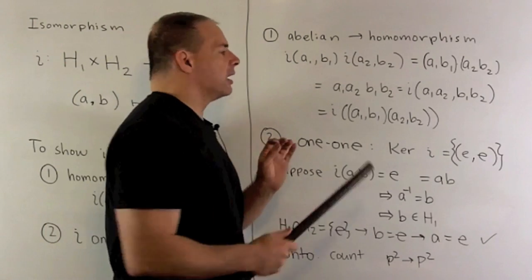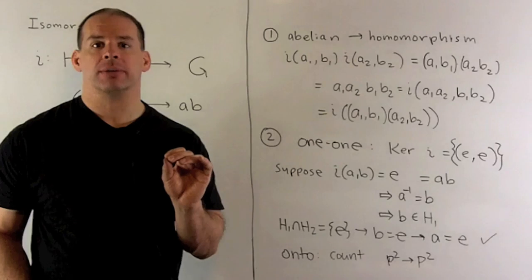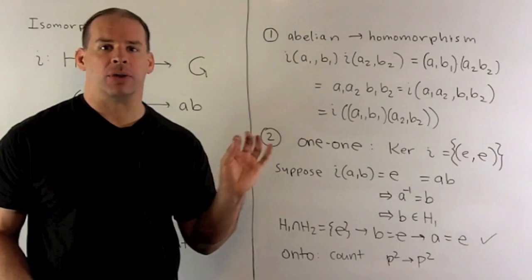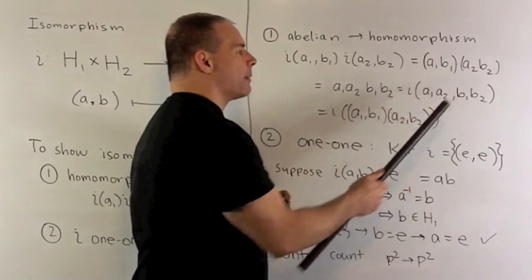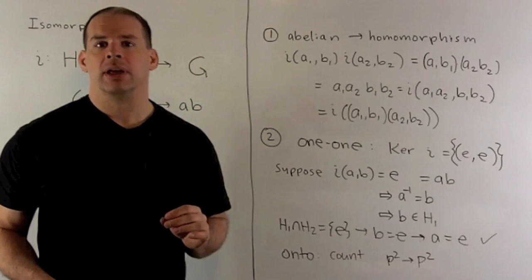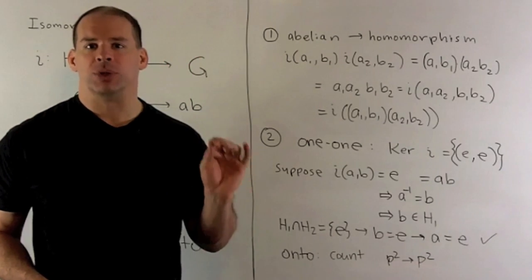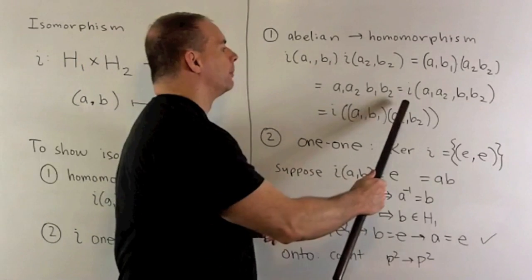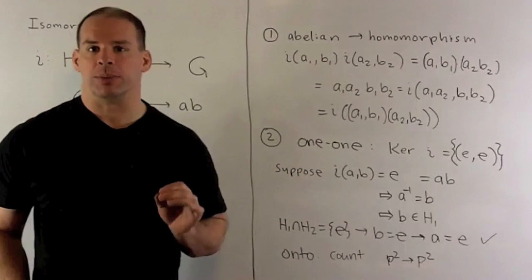So I'm going to take i and apply it to the product of our pairs. Now if we take the product of those pairs, we're going to get (a1 a2, b1 b2). If I apply i to that, we just get our term in the middle. So that shows my homomorphism property.